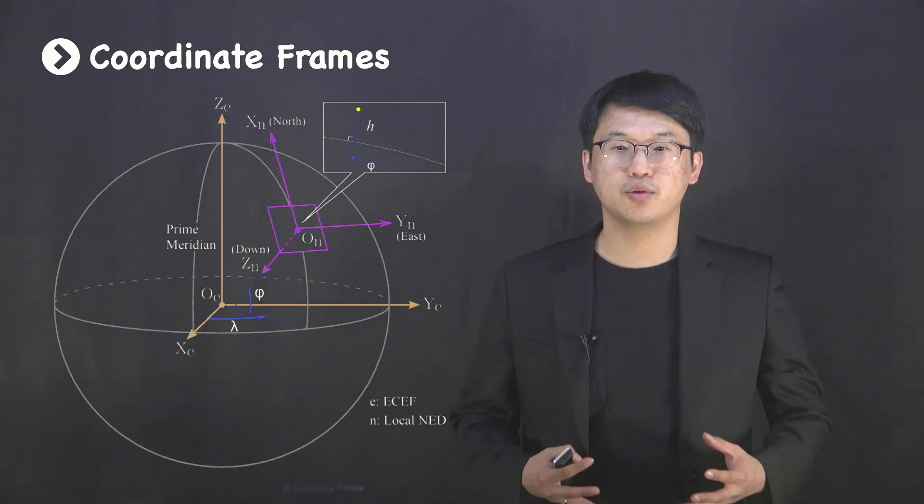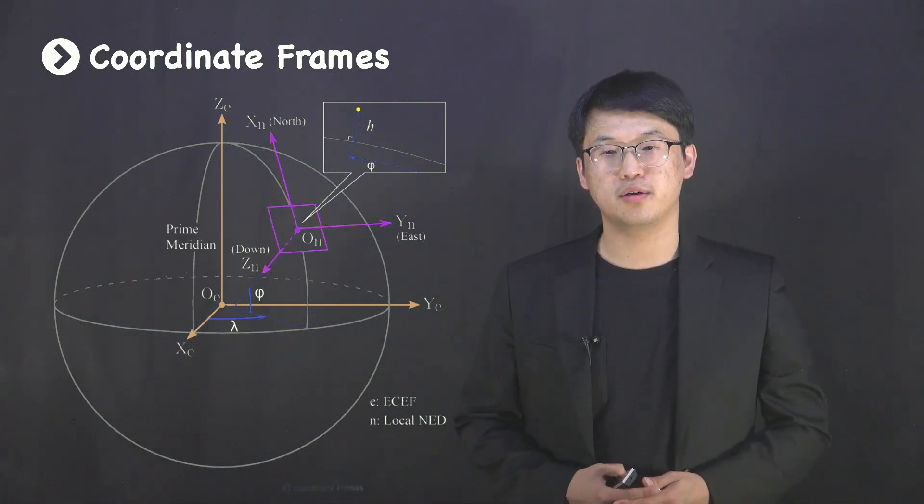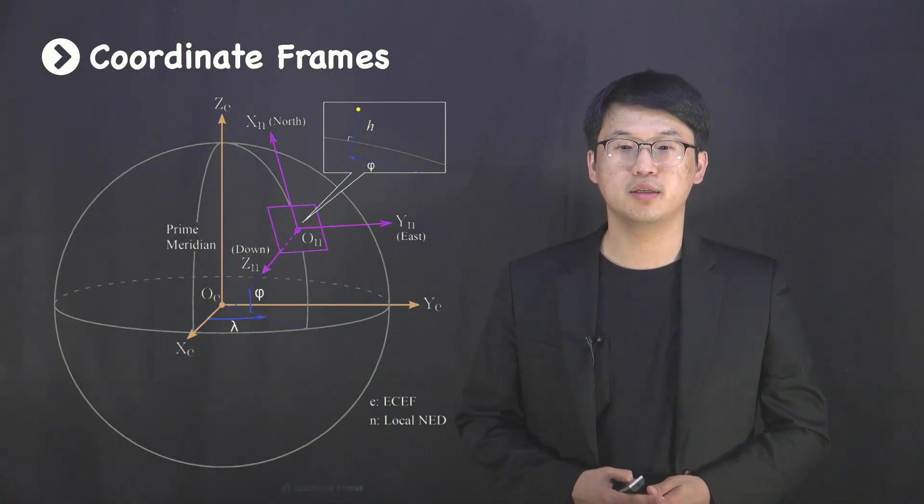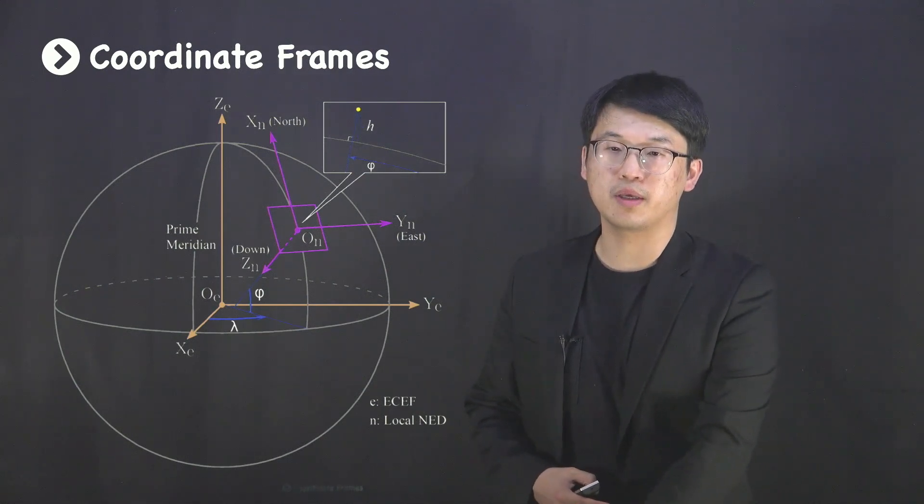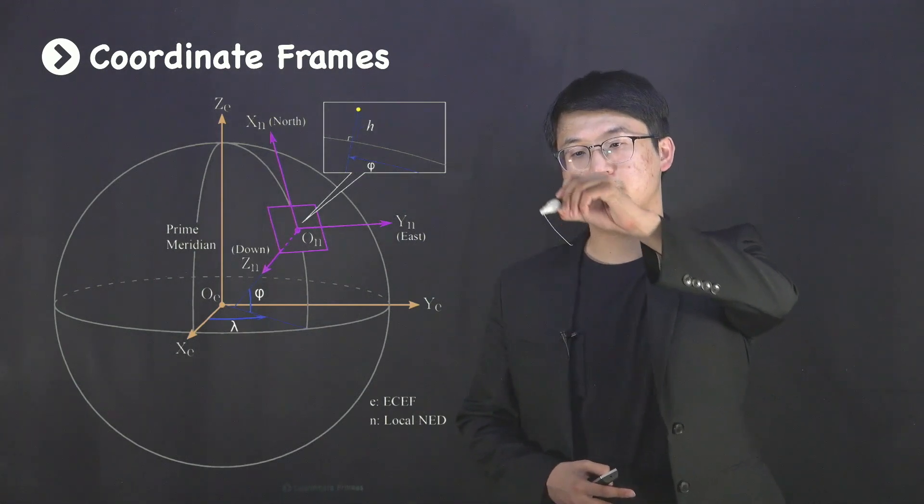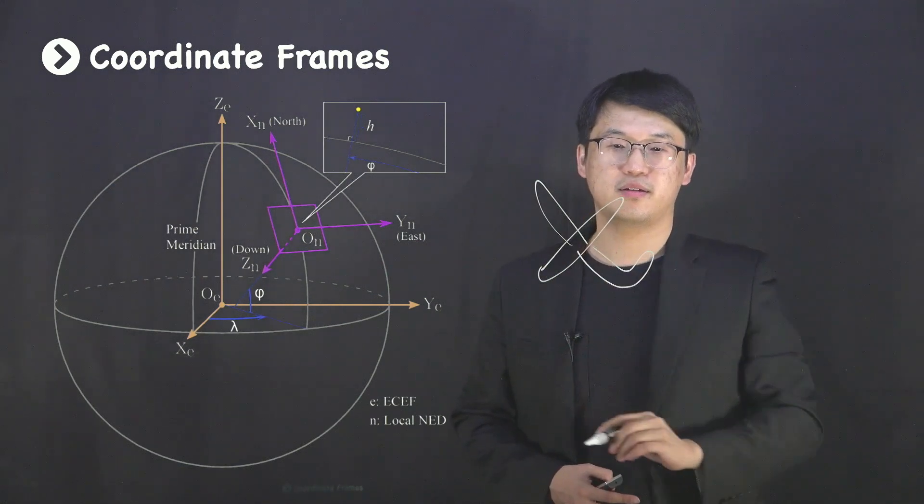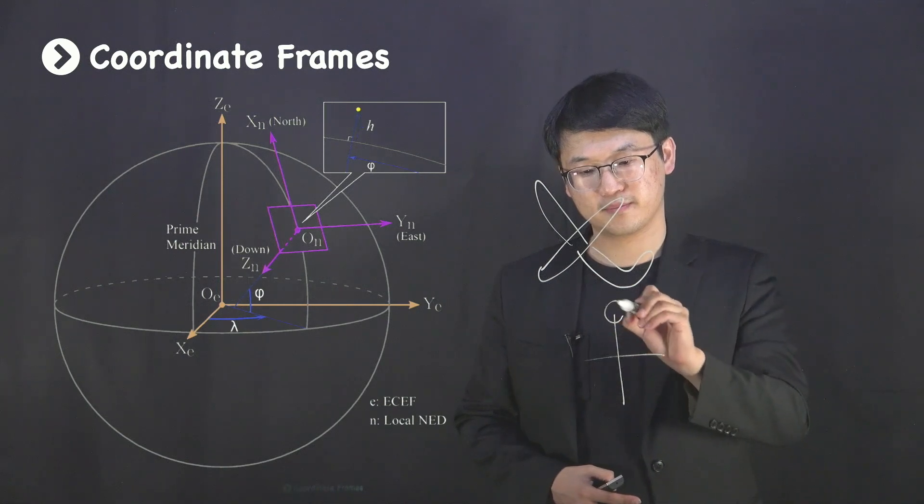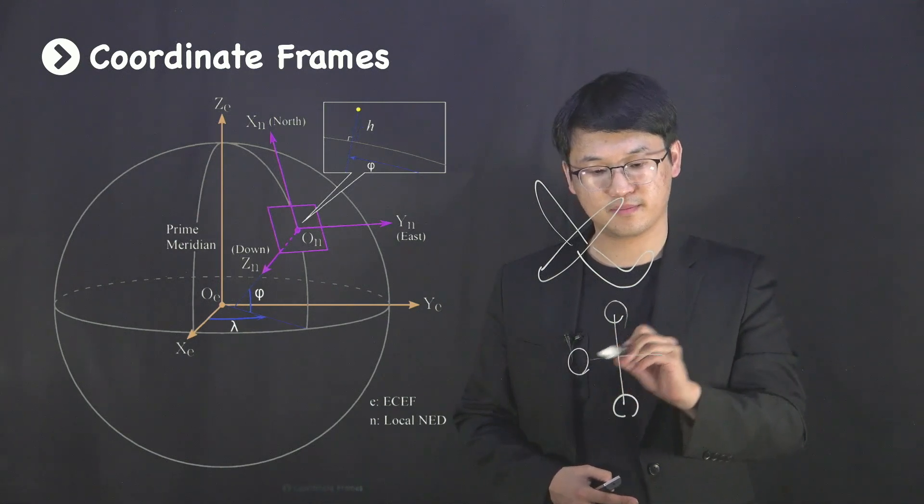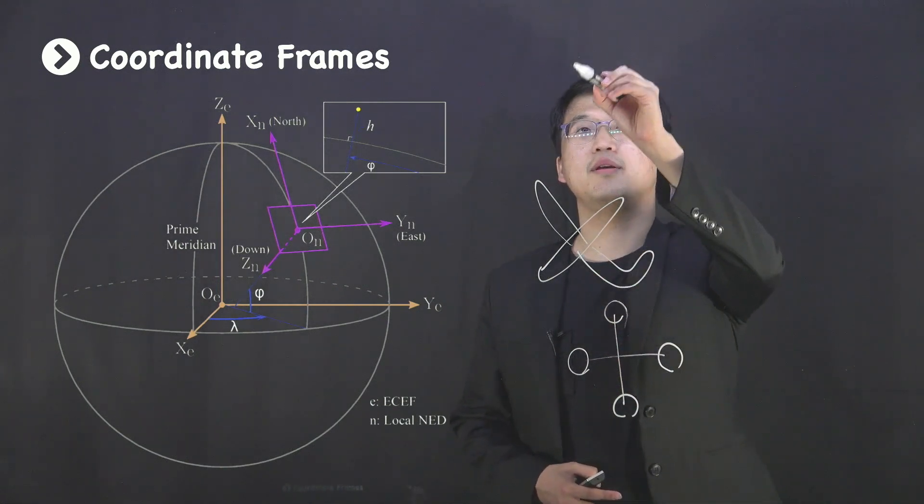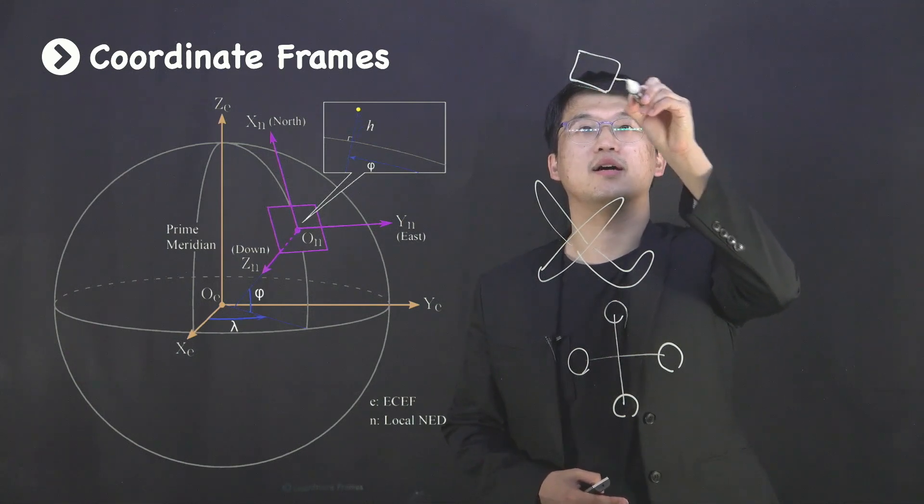So, typically, we use Earth-centered inertial, Earth-centered Earth-fixed, or local NED frames of reference in describing aerospace objects like an airplane, your quadrotors, and maybe a satellite.